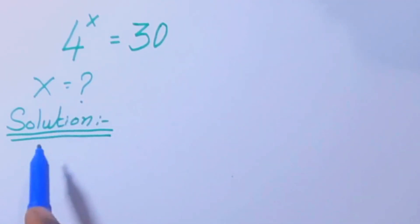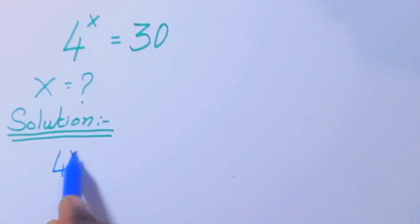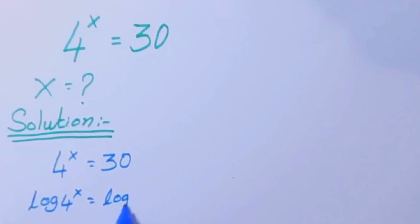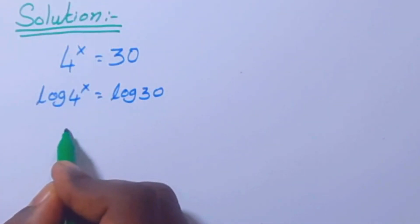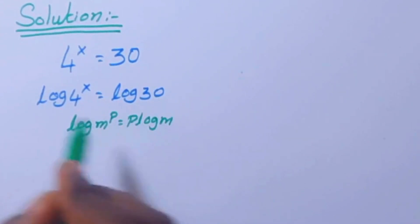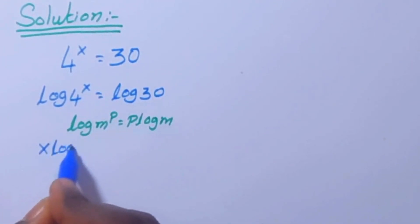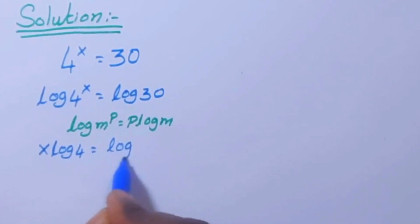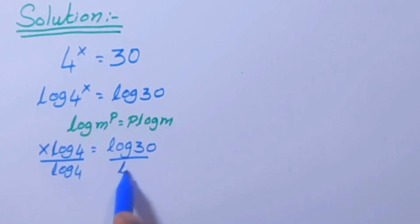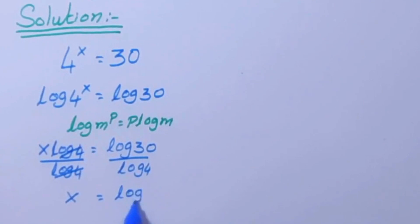Today we are going to solve this equation to find the x value solution: 4 power x equal to 30. Now take a log on both sides: log 4 power x equal to log 30. We are going to use the log power formula — log m power p equal to p log m — to get x log 4 equal to log 30. Now divide by log 4 on both sides, so x equal to log 30 by log 4.